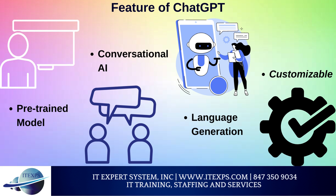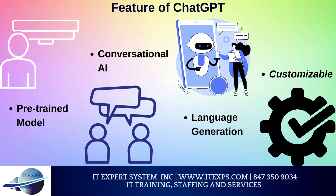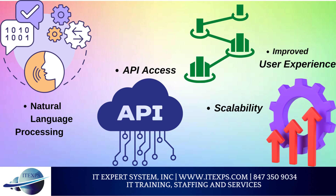Language Generation: ChatGPT can be used for language generation tasks, such as generating text summaries, captions, and articles. Customizable: ChatGPT can be fine-tuned and customized to fit the specific needs of an application, allowing developers to tailor the model to the specific use case and domain. Natural Language Processing: ChatGPT is equipped with advanced natural language processing capabilities, allowing it to understand and respond to the context and meaning behind words and phrases. API Access: ChatGPT is available through the OpenAI API, making it easy for developers to integrate it into their applications.